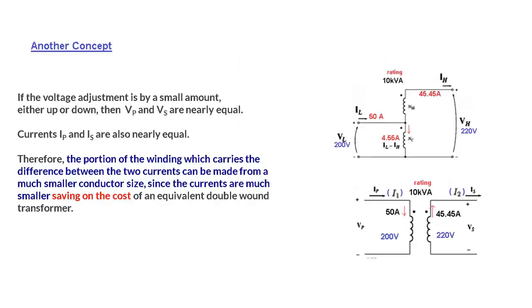Okay now another concept that we have to keep in mind. This was the let's say this is the transformer input voltage is 200 and output voltage we want 220. So we can use a two winding transformer.